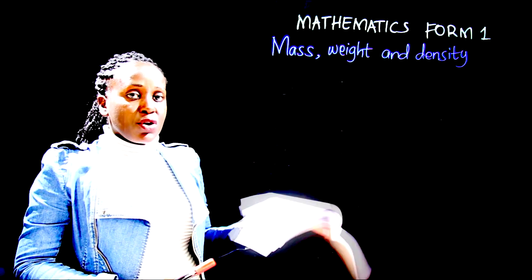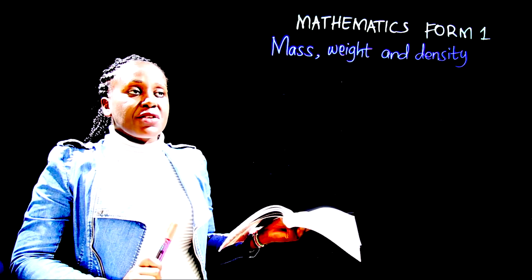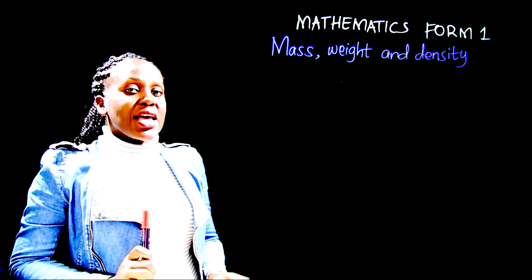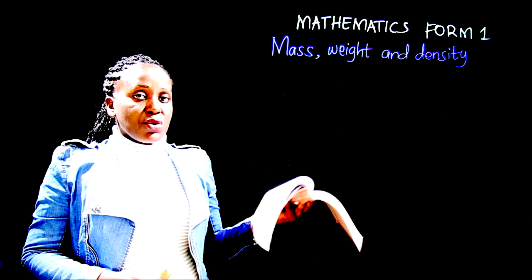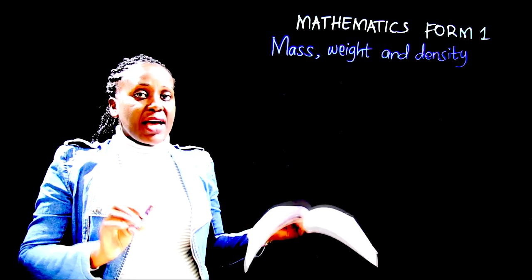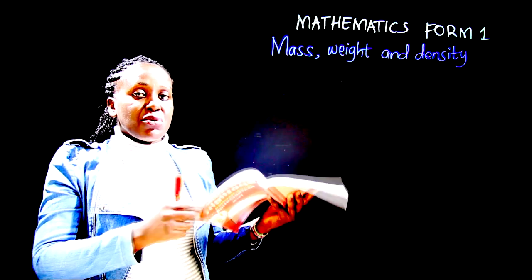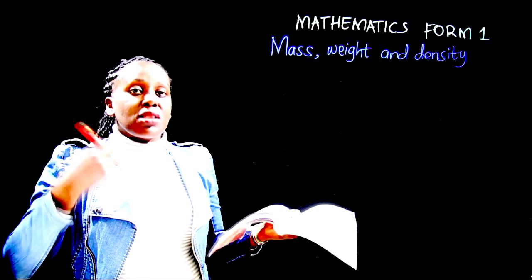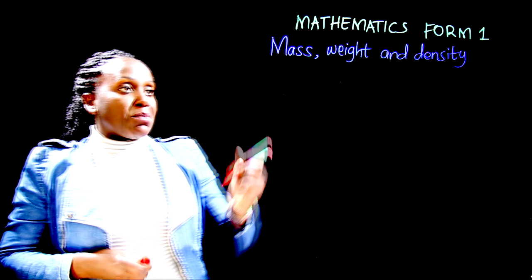If you hold this book you can feel how heavy it is, so how heavy an object is is what we refer to as mass. The scientific definition of mass is the quantity of matter in an object. If you hold this book and this marker pen, you realize the book is heavier than the pen, meaning the quantity of matter making up the book is more. So the more the matter, the heavier an object is.